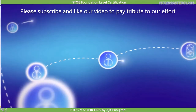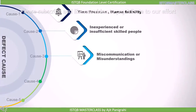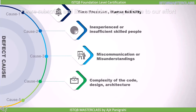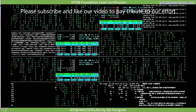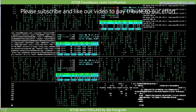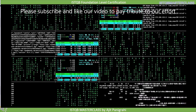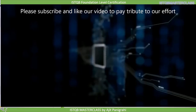The fifth cause is complexity of the code, design, and architecture. This means that even if you have experienced people in your team, if the code is very complex then you might end up making an error.